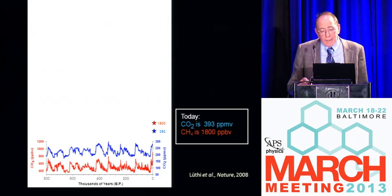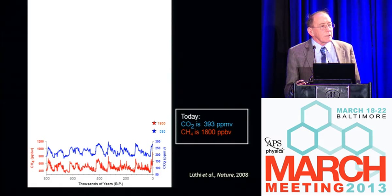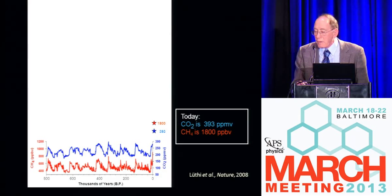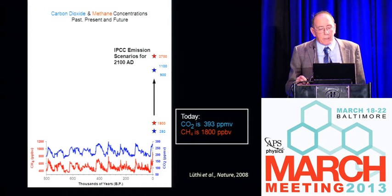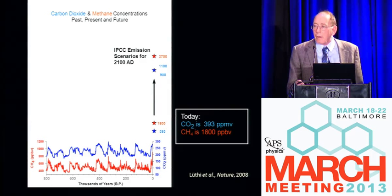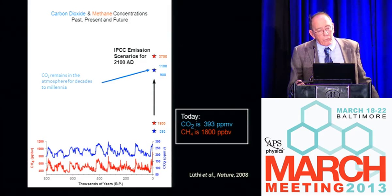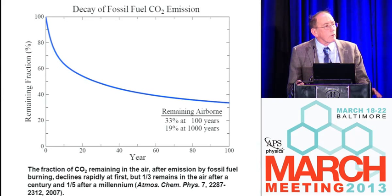Currently we are in a no-analog situation when we look at the levels of CO2 in the atmosphere, and we're very concerned about where the projections are for where we'll be in less than 100 years. Methane has a relatively short lifespan on the order of a decade, whereas CO2 can remain in the atmosphere for decades to millennia. Even if we were able to stop production tomorrow, CO2 would be around for a very long time impacting the climate of this planet.